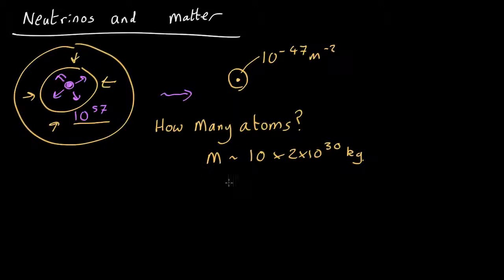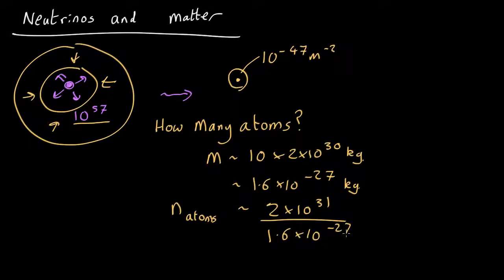The mass of one hydrogen atom is about 1.6 by 10 to the minus 27 kilograms. So number of atoms is going to be about the total mass, so that's 2 by 10 to the 31 from here all over 1.6 by 10 to the minus 27, which comes out as roughly 10 to the 58 atoms.